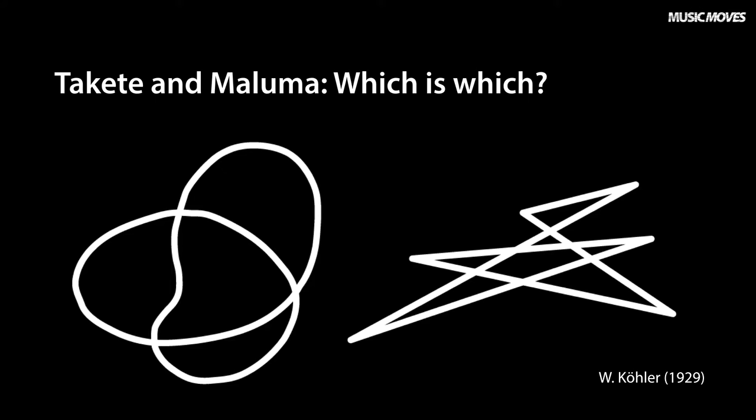Wolfgang Koehler demonstrated this as early as 1929 with the two figures Takete and Maluma. When asked to match the words to the figures, most people said that the curved figure on the left was Maluma and the jagged figure on the right was Takete. Somehow our understanding of the word Takete with its short consonant sounds matches well with the abrupt jaggedness of the right figure, and the more prolonged vowel sounds of Maluma match with the bloated figure on the left.